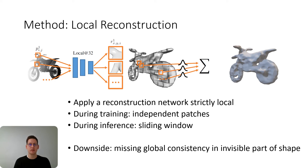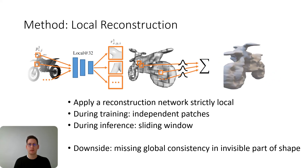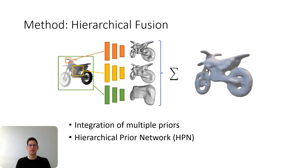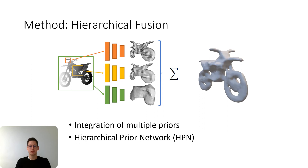However, this has one downside: since the local patches miss global consistency, this is especially visible in the invisible part of the shape, as you can see for the back side of this motorbike. The second part of our method is the hierarchical fusion, which tackles the global inconsistency that results from learning only local priors. We integrate multiple priors from multiple levels of locality, as well as the global prior. We call this the hierarchical prior network, and you can see for the back side of the motorbike that this resolves the global inconsistency.